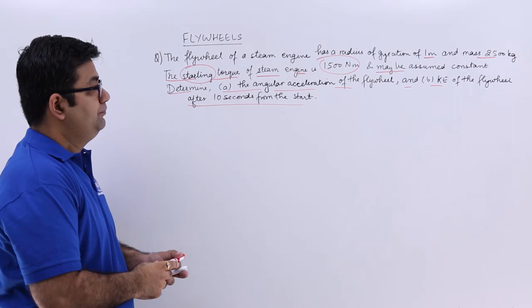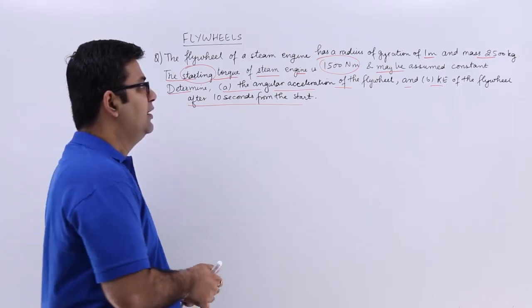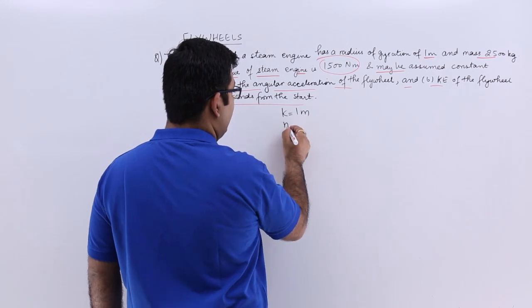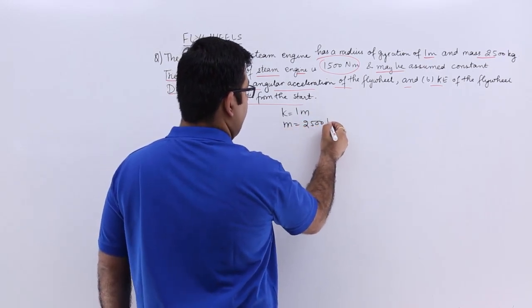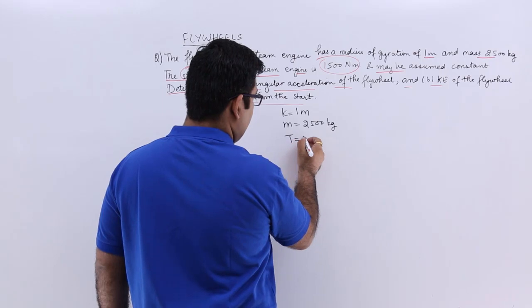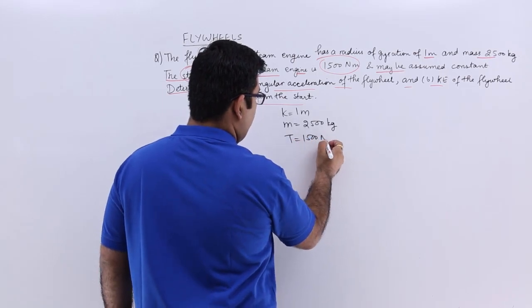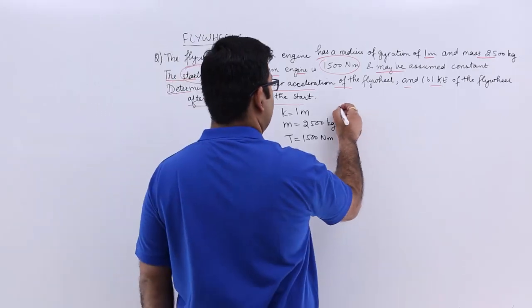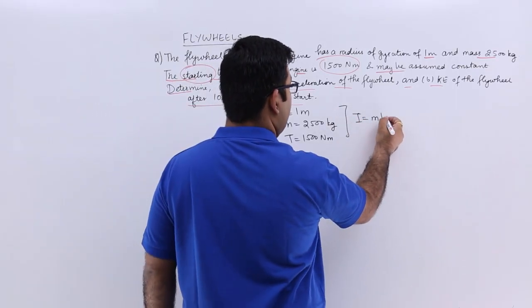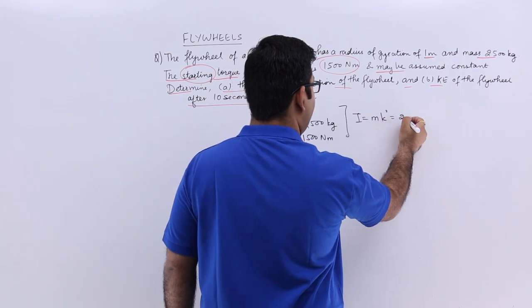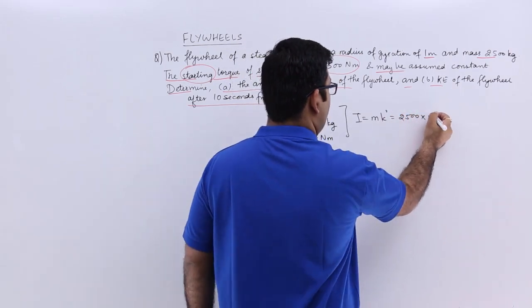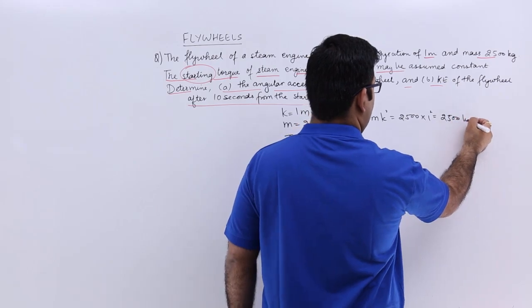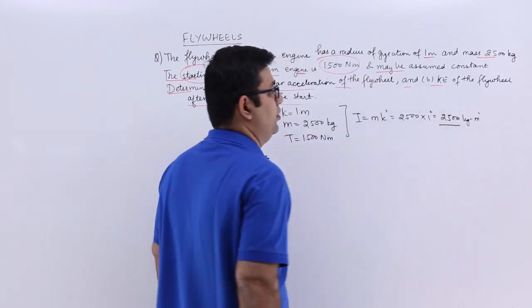So the data is: radius of gyration is 1 meter, mass is 2500 kg, torque is 1500 newton meters. This makes the moment of inertia as mk squared, which is 2500 times 1 squared, which equals 2500 kg meter squared.